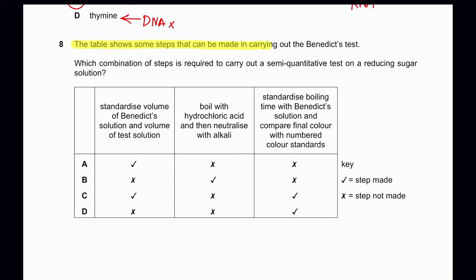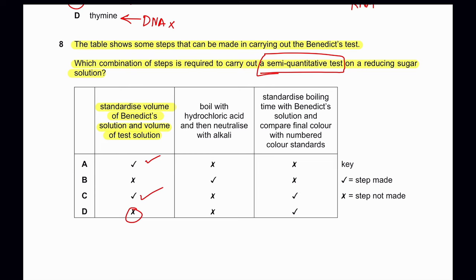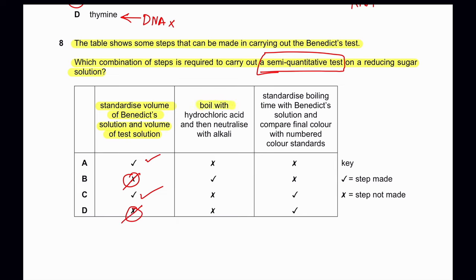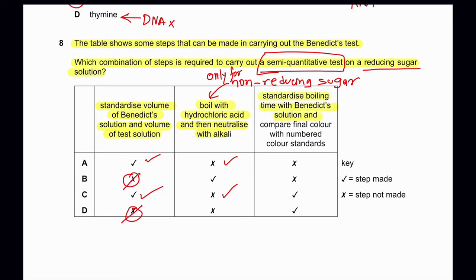Question 8: The table shows some steps in carrying out the Benedict's test. Which combination of steps is required for a semi-quantitative test on a reducing sugar solution? For a semi-quantitative test, we need a standardized volume of both Benedict's solution and the test solution — so options B and D are crossed out. Boiling with hydrochloric acid then neutralizing with alkali is only needed for non-reducing sugars, so that step is not made. Standardizing boiling time and comparing the final color with numbered color standards is required for a semi-quantitative test. So C is the correct answer.